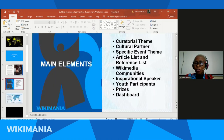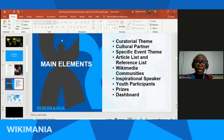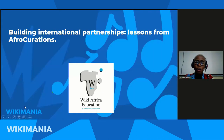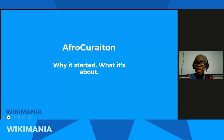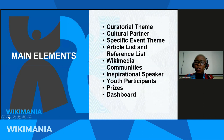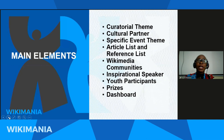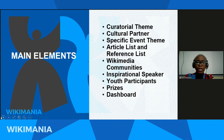The main elements for Afro-Curation events were curatorial teams — for each event there has to be a team. We had cultural partners, specific event teams, articles listed and reference lists, media communities participating, inspirational speakers who give participants enthusiasm about why they should edit Wikipedia and tell the stories of Africa. We also had youth participants, prizes, and the dashboard. These were the main elements of every Afro-Curation event.